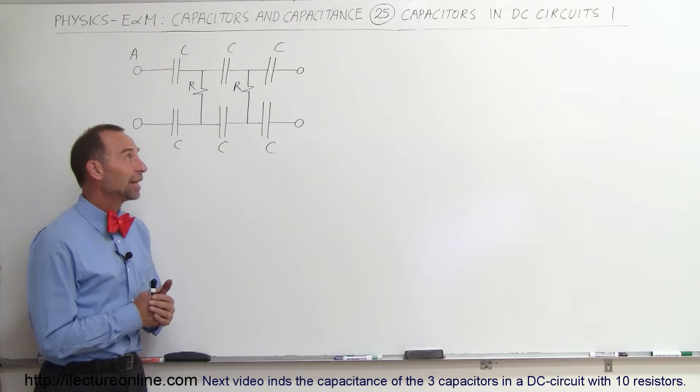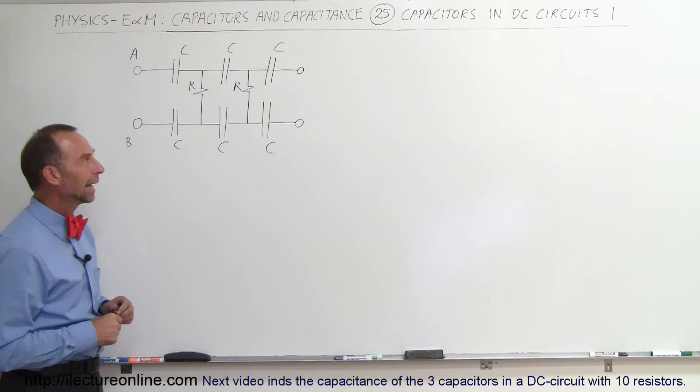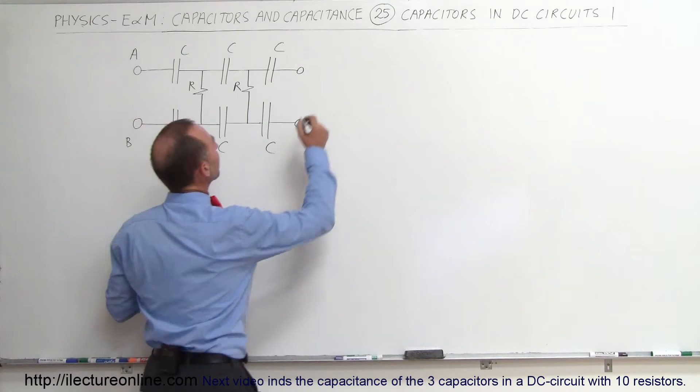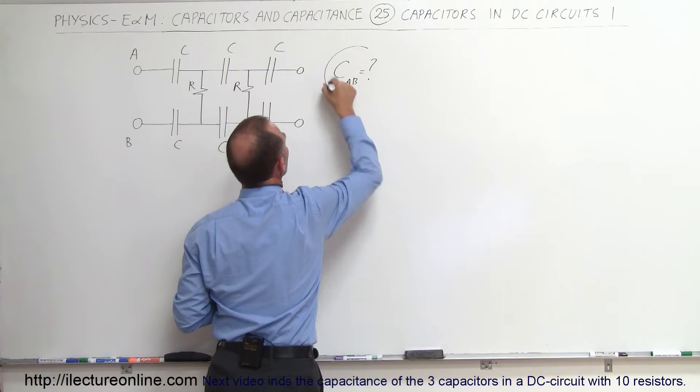Welcome to ElectronLine and here we have an interesting circuit with resistors and capacitors. The ultimate question here would be between A and B, what would be the capacitance between A and B on the circuit? So that's what we're ultimately trying to find out.